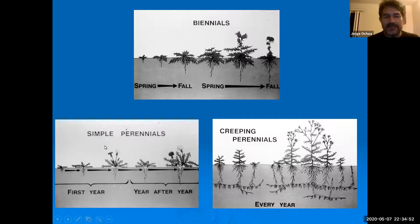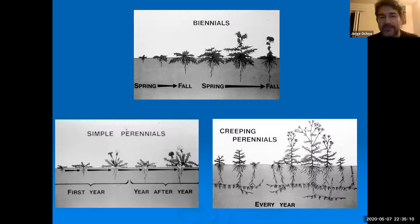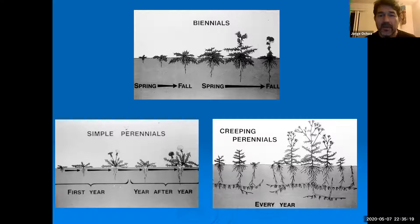Then we have simple perennial weeds like the dandelion — present for many, many years. Perennial weeds are a lot more difficult to control because you need to remove the entire portion of the plant including the roots. Many of these weeds can regrow and reestablish themselves from a small piece of root left behind.